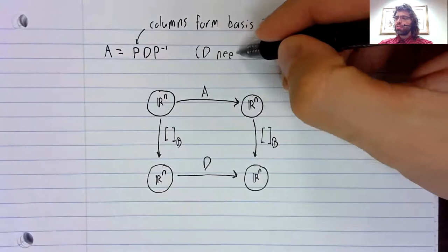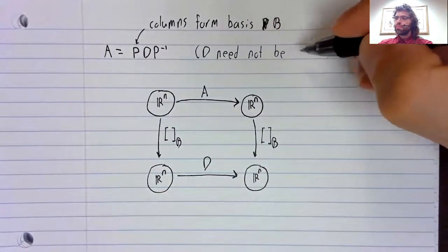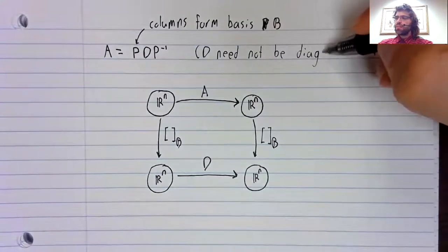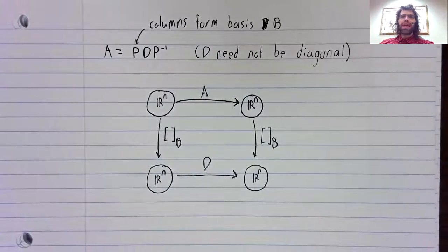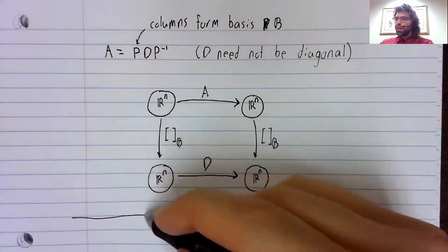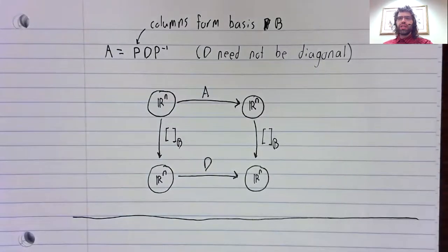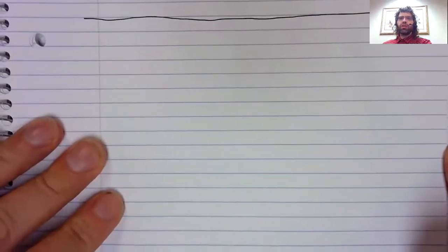However, D does not need to be diagonal for this to be true. And with that observation in hand, let's look at a discrete dynamical system with complex eigenvalues.